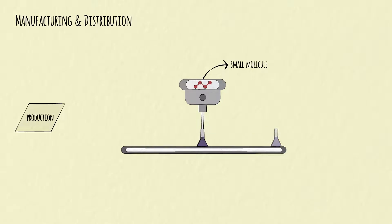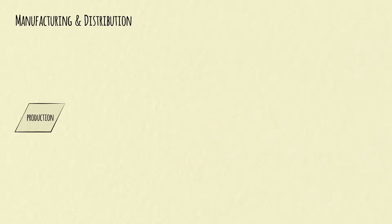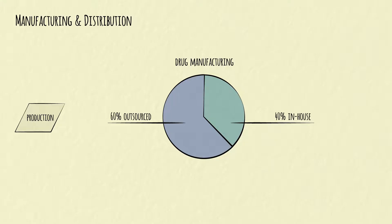With small molecule drugs, active ingredients can be synthesized easily through a chemical process. But with biologics, active ingredients must be grown. The production process relies on live cells or viruses, highly sterile environments, and specialized equipment. Because of these needs and the scale of operations required by the industry, as much as 60% of drug manufacturing is outsourced to dedicated drug manufacturing companies.